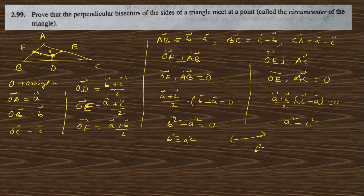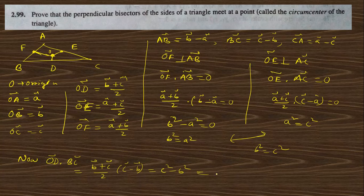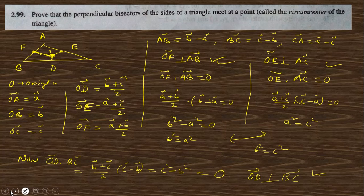From these two results, b² = c². Now we compute OD dot BC: OD = (b + c)/2 and BC = c - b, so OD dot BC = (c² - b²)/2. Since c² = b², this equals zero. Therefore OD is perpendicular to BC. Since we assumed two perpendicular bisectors and proved the third, the perpendicular bisectors are concurrent.